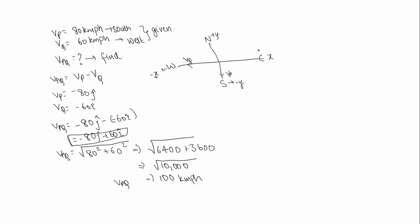Now we will plot this. The positive x-axis, positive y-axis, negative x-axis, and negative y-axis are marked. Minus 80 j-cap lies along the negative y-axis and plus 60 i-cap lies along the positive x-axis. The relative velocity vector lies in that quadrant, and we draw a line for it. Here theta is the angle, with the adjacent side being 60 i-cap and the opposite side being 80 j-cap.